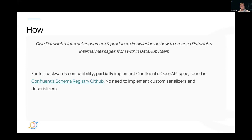From an implementation perspective, what we're going to do for full backwards compatibility is to partially — and the keyword here is partially — implement the Confluent OpenAPI spec for the schema registry. There is a link in this presentation that will be shared in the slides. This means there is absolutely no need to implement custom serializers and deserializers. It's just a drop-in replacement — we take out schema registry as an external component, and things should just work.